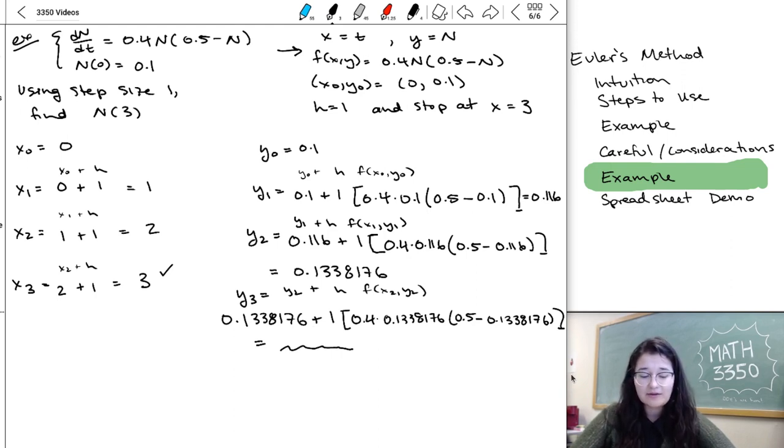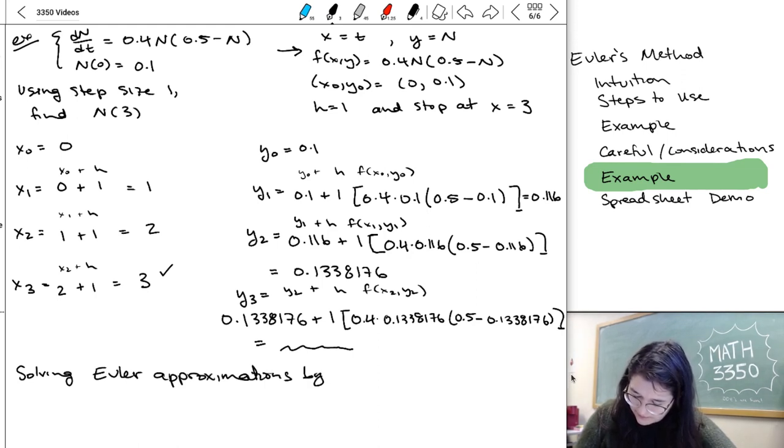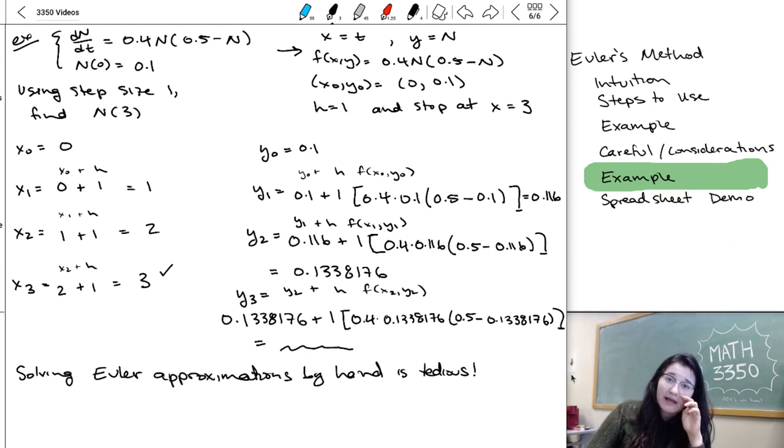And the reason I chose to do this example is because I wanted to show you that this is quite tedious. I want you to know how to calculate it by hand. I want you to know that this is a linear approximation, that it's super related to direction fields and things you learned in calculus. I want you to do it exactly once, so you understand that,